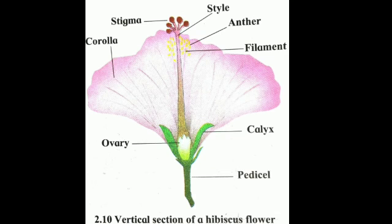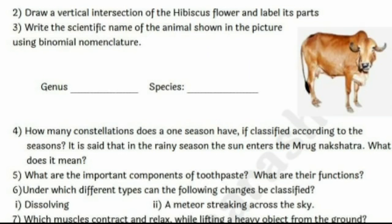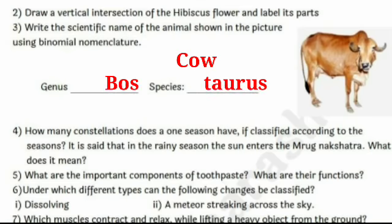Next question: write the scientific name of the animal shown in the picture using binomial nomenclature. This animal is a cow. The genus of cow is Bos and the species is taurus. Write the name of genus and species properly.